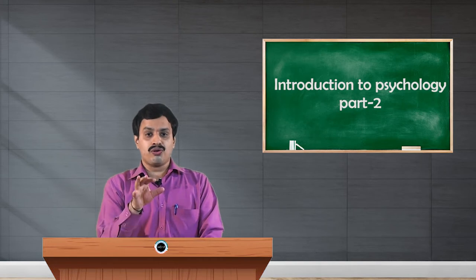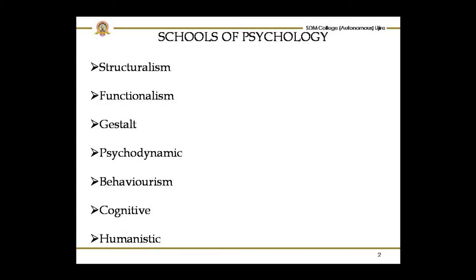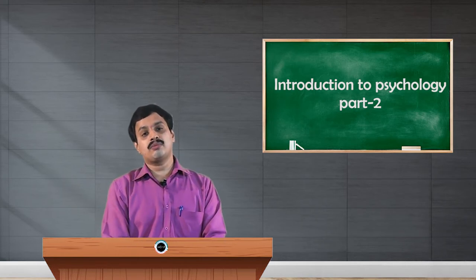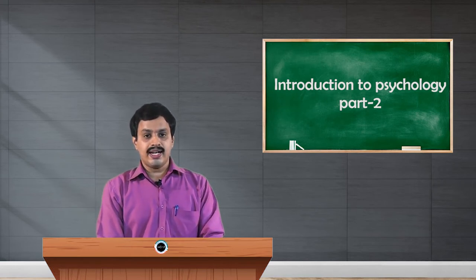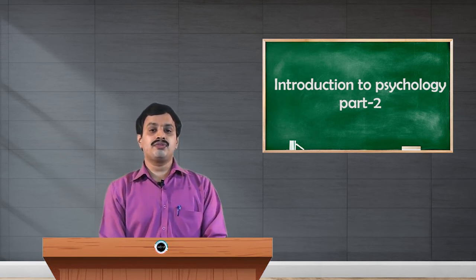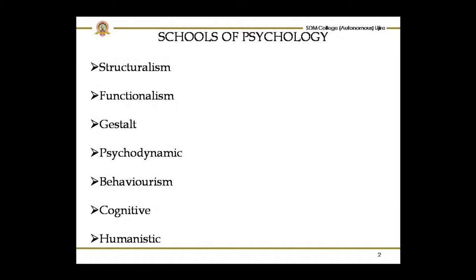They mainly focused on the functioning part of human mind than the structural part. There were many researchers or scholars who developed functionalism. William James was one of the major proponents of the functionalism school. He wrote a book called The Principles of Psychology in which he explained what functionalism exactly is. Later, many research psychologists and functionalists emerged in the field like Harry Kerr, Angel, and John Dewey.